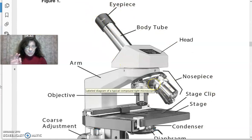Your objectives are down here. Your microscope does not look exactly like this, but all microscopes have the same parts. You have three objectives here: one is 4x, one is 10x, one is 40x. Explore them a bit.